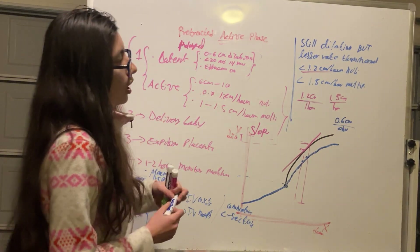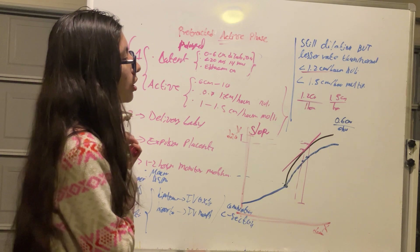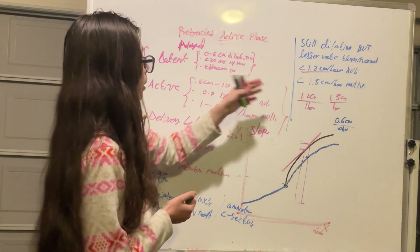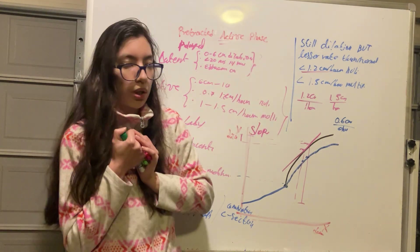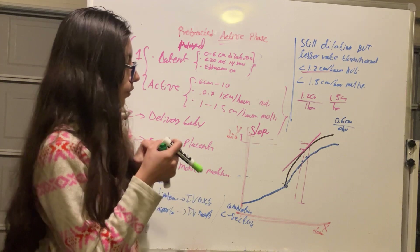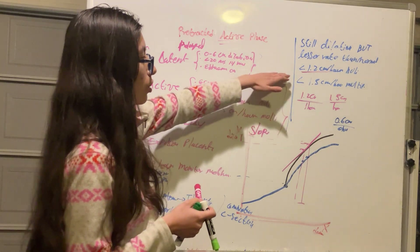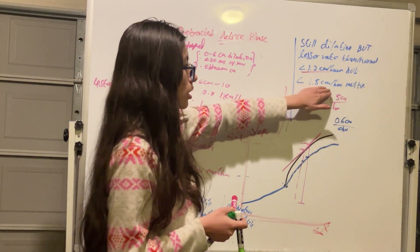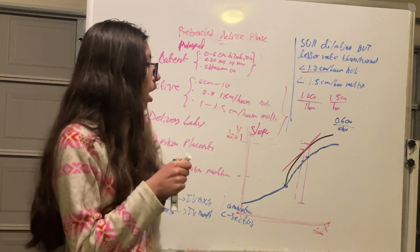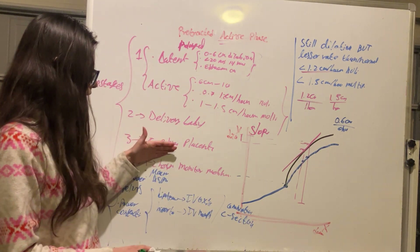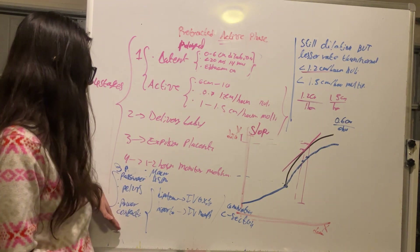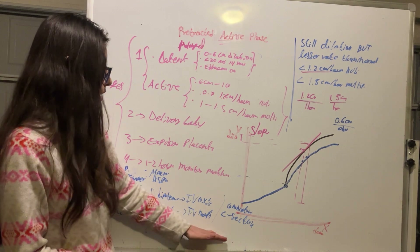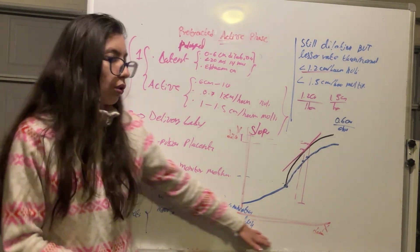In summary, protracted active phase means we still have dilation of the cervix but at a lesser rate than normal during the active phase — less than 1.2 centimeters per hour in a nulliparous woman or less than 1.5 centimeters per hour in a multiparous woman. Causes include the three P's: passenger, pelvis, and power (contractions). If IV oxytocin fails, the last resort is a C-section.